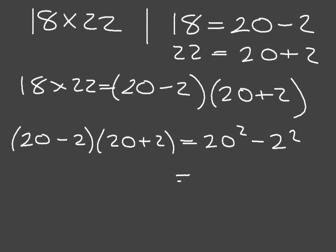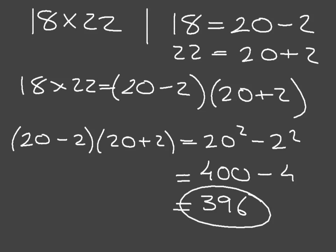This in turn leads us to 20 squared, which is 400, minus 2 squared, which is 4. And so we find our answer very quickly, which is 396. Of course, we could have found the same answer with long multiplication, but you can see, and I'm sure you can appreciate, that it's much faster to calculate 18 times 22 using this method.